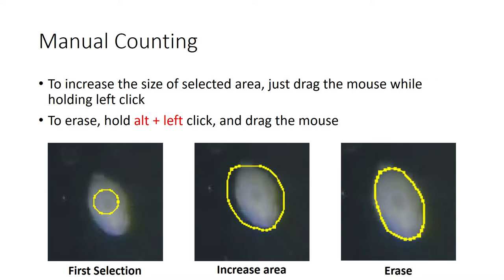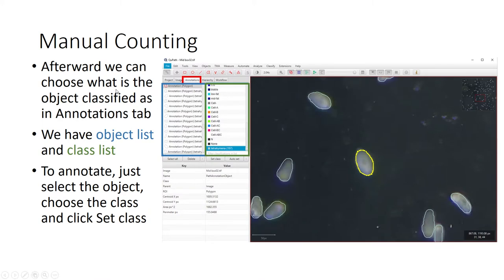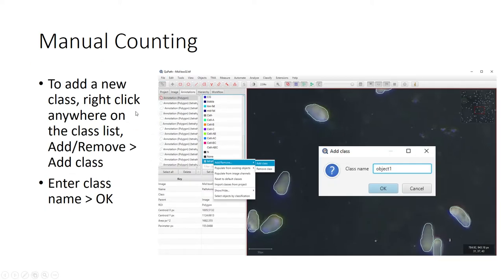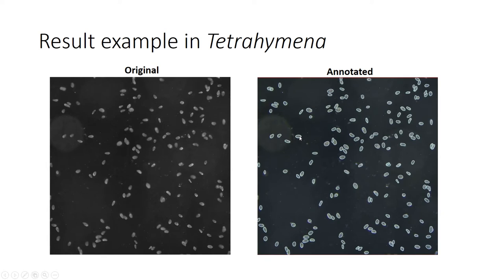To increase the size of the selected area, drag the mouse while holding left click to expand it. If you select too much area, you can erase by holding Alt and left-clicking while dragging to tidy the area. Afterward, in the Annotations tab you can choose what class the object belongs to — select the object, choose the class, and click 'Set Class.' To add a new class, right-click on the class list, select 'Add Class,' and type the class name in the pop-up window.